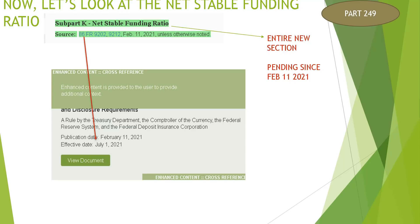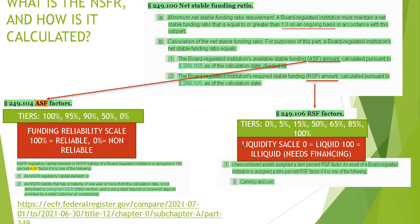Now let's look at the new standard itself — it's called the Net Stable Funding Ratio, found in Subpart K. I'll link this and the PowerPoint below. The Net Stable Funding Ratio was first created February 11th, 2021, and was just effective as of July 1st. Everything in green in the text is newly added, meaning this entire section called the Net Stable Funding Ratio was just added.